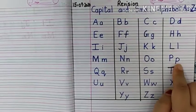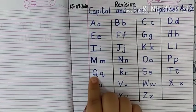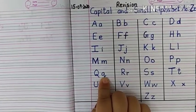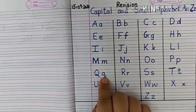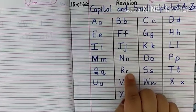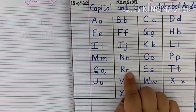Next, capital P, small p, P says P. Capital Q, small q, Q says Q. Next, capital R, small r, R says L.